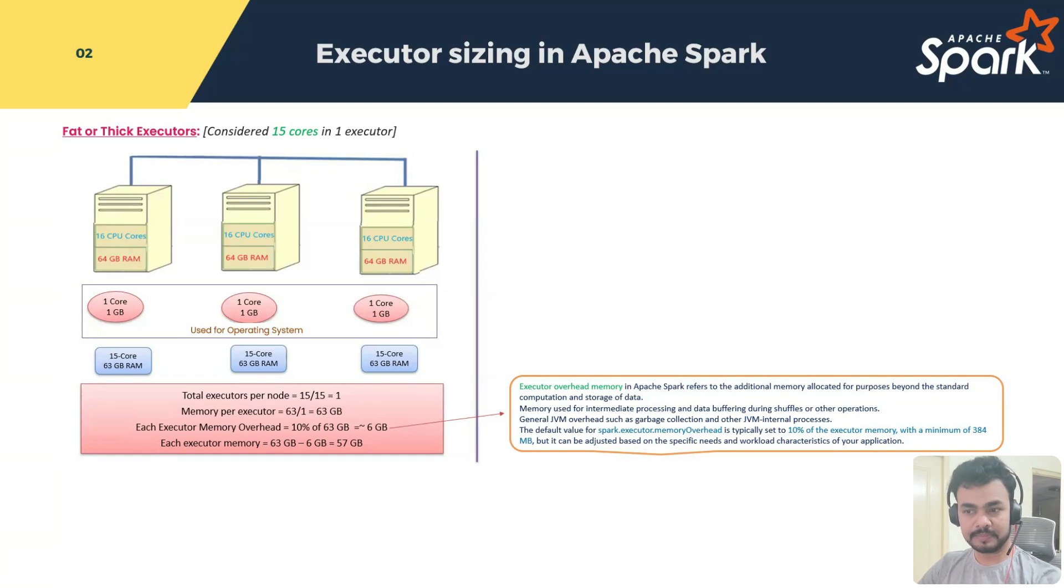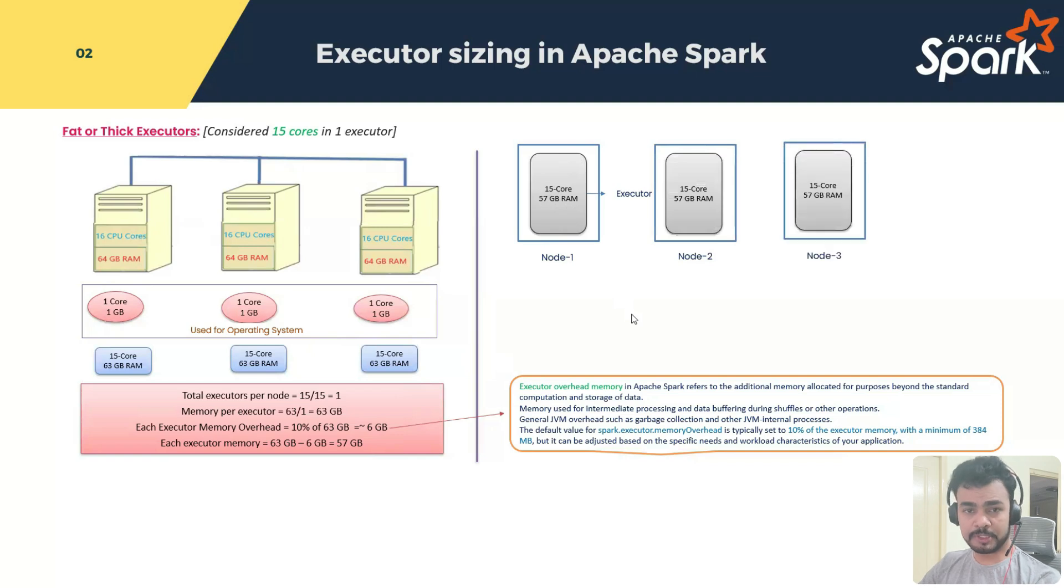Is this clear? Yes, sir. Great. If you are able to understand till here, it is very easy. See, indirectly what I am saying is entire this 15 core and 57 GB, what is 57 GB? This is the executor memory. You can say on-heap memory. And what is the off-heap memory in this case? 6 GB. That is why we mentioned 15 core, 57 GB RAM. This entire configuration is one executor. Like that we have how many? Three nodes. Which means we have total three executors.